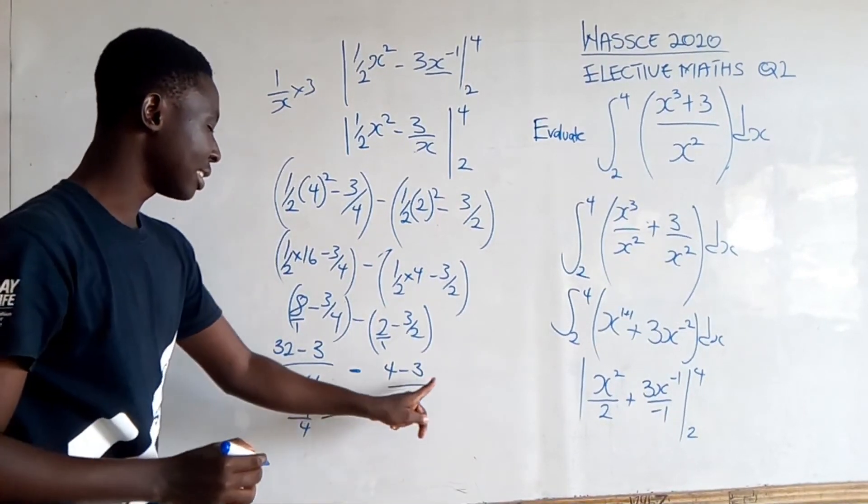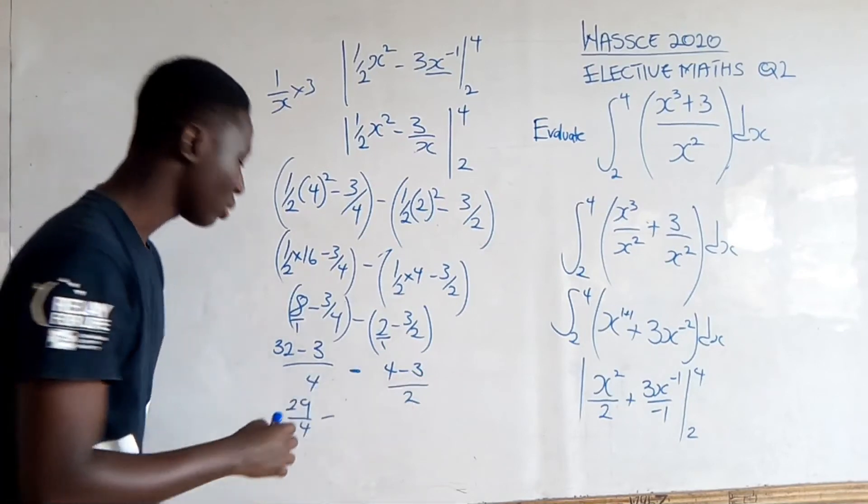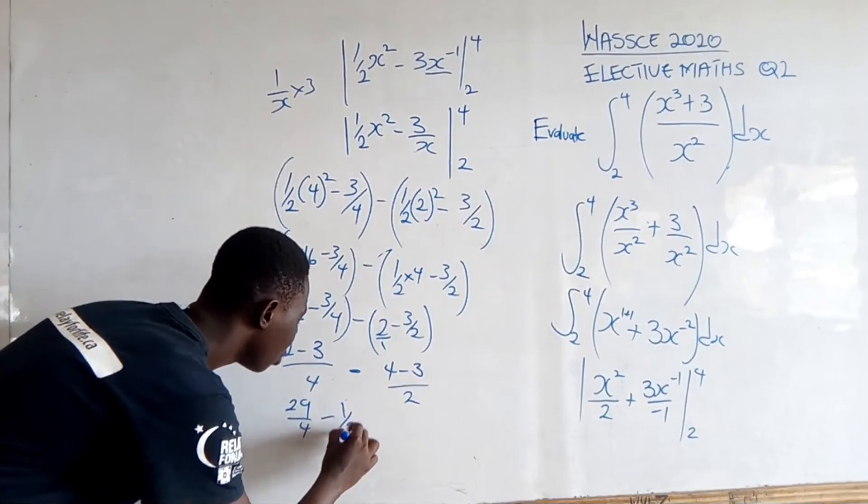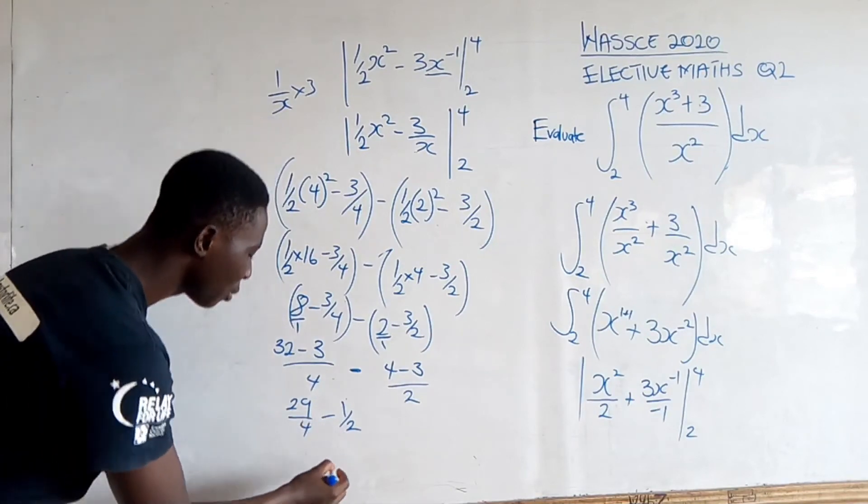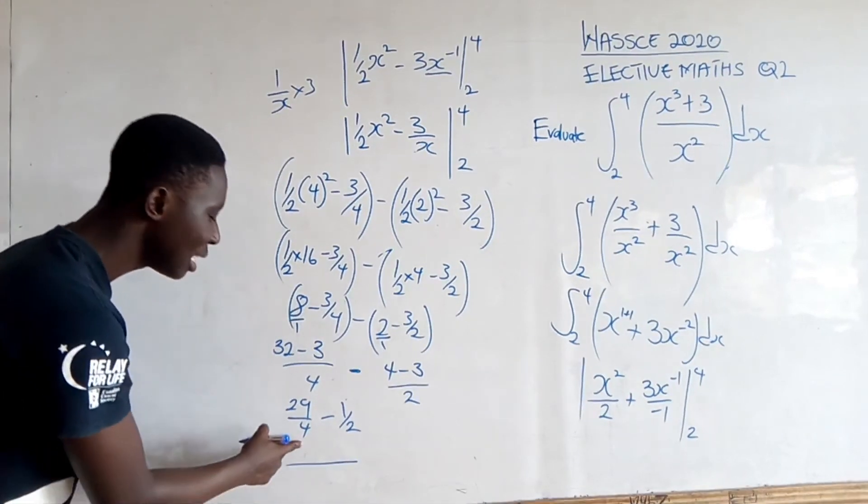Minus, 4 minus 3 is 1, so 1/2. Then from here, we find the LCM, which is 4.